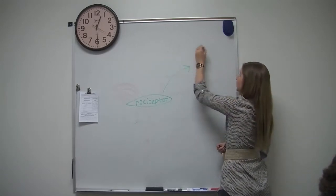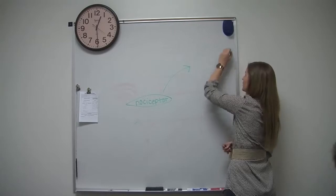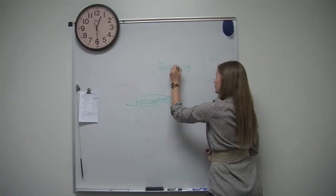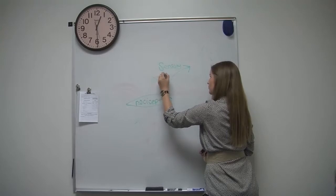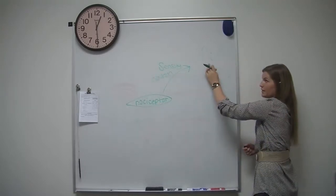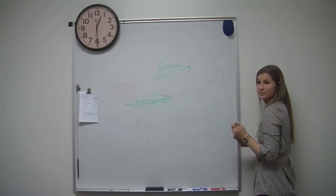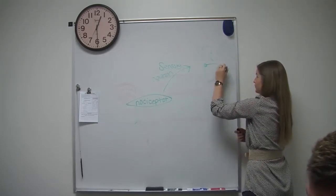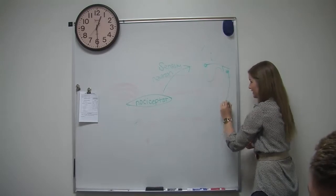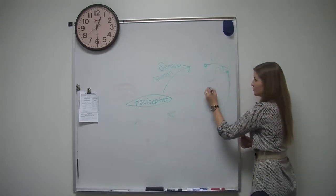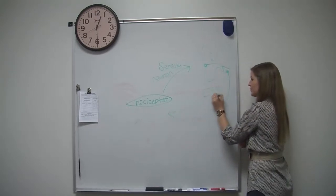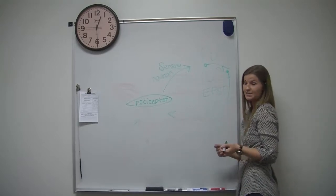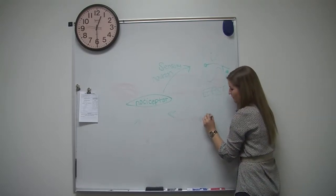We're going to send a sensory neuron up here. Is there an interneuron? Yeah. It's an excitatory interneuron — interneuron, interneuron. So we're going to conduct an EPSP. Excitatory means what? We're going to contract something. We're going to excite the muscle through their alpha motor neuron.